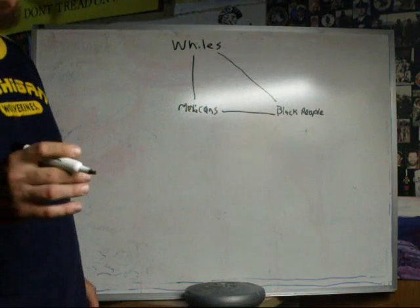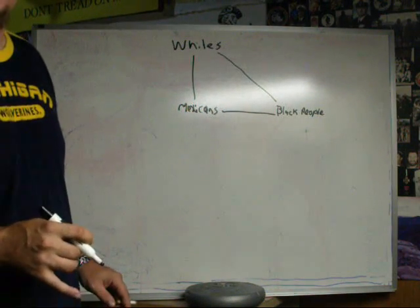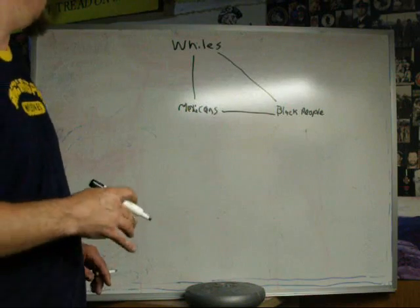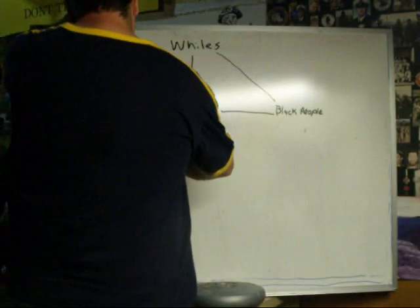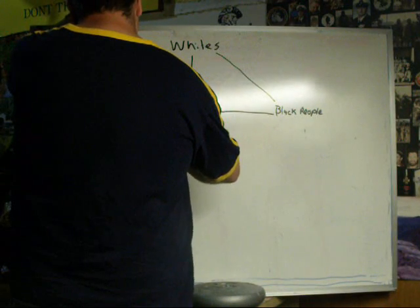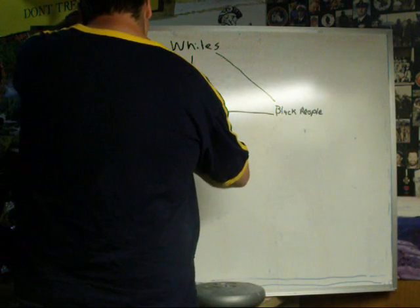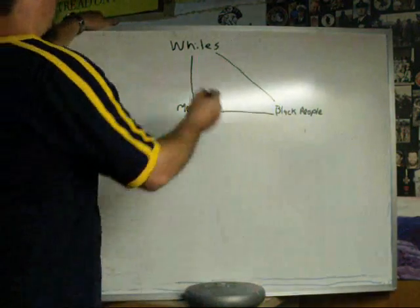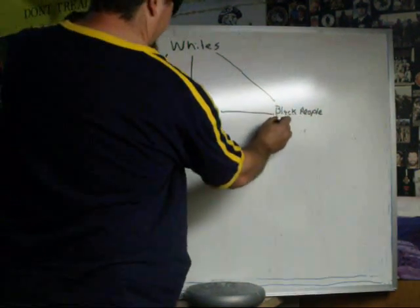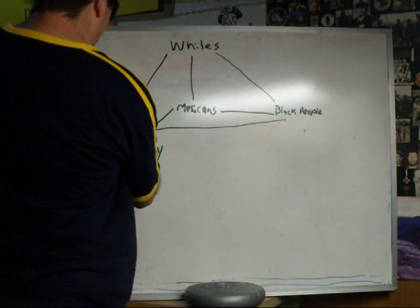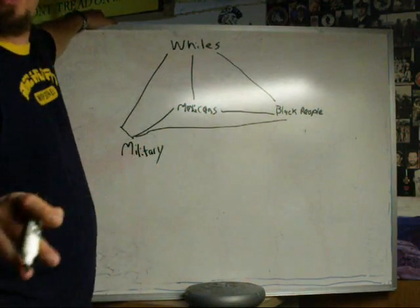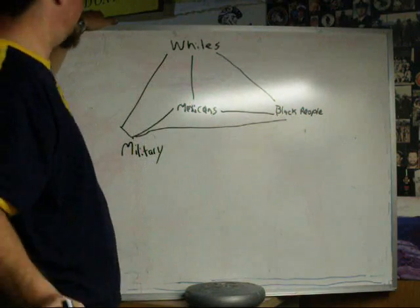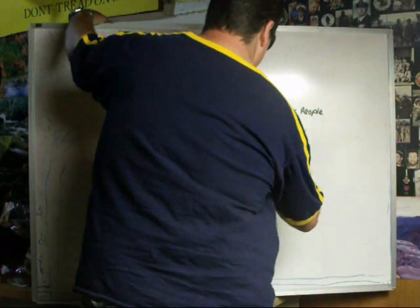Then we have all the shit that's being done to make everybody hate the military. So we can go ahead and throw military over here. And we can draw a line from all of these down to the military. Well, right now, another thing going on is all the hatred towards the police. Everybody's hating the police. So we can go ahead and put police down here.